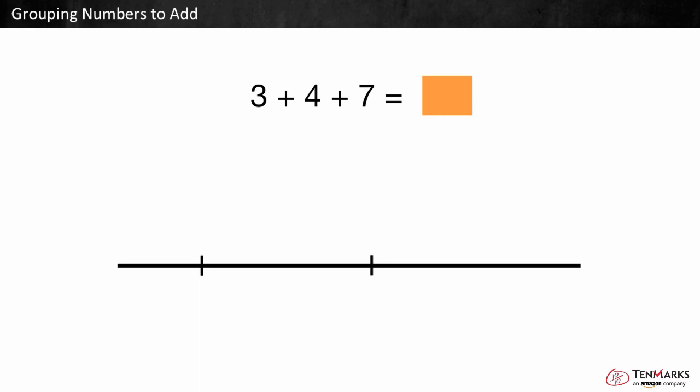Making a 10 can be easier to add, so look for a way to make a 10. We know that 3 and 7 make 10, so add those numbers first. On a number line we start at 3 and add 7, which makes 10.